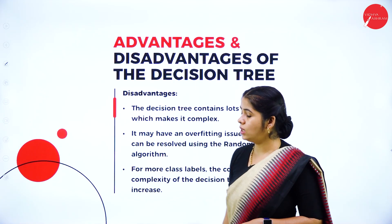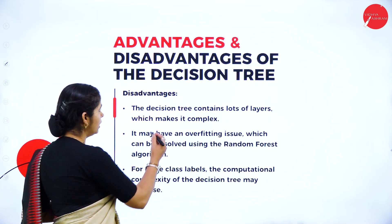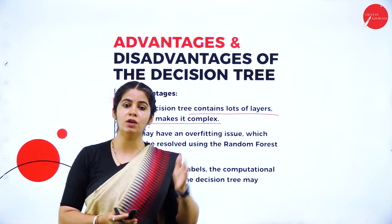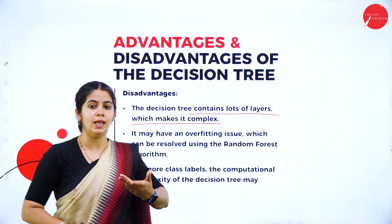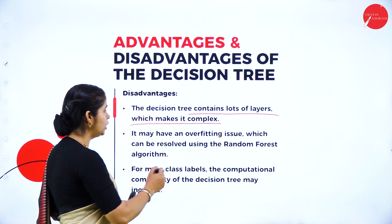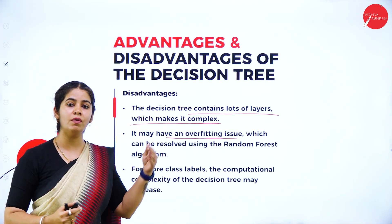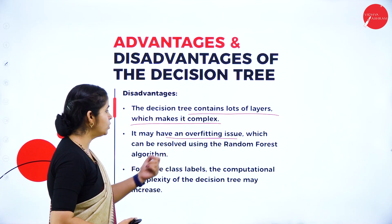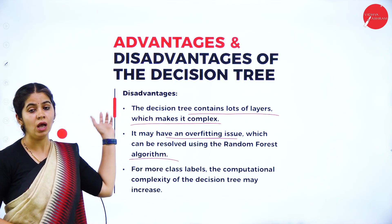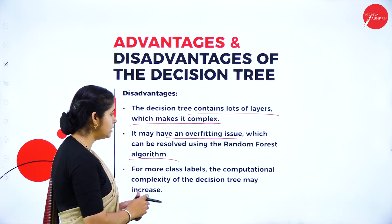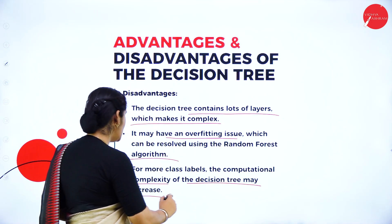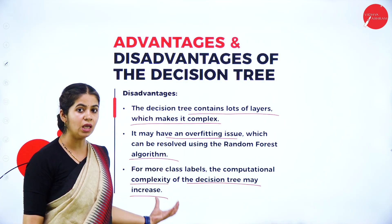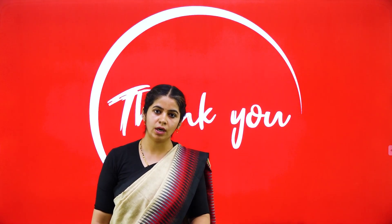Disadvantages of the decision tree: the tree contains many layers, which makes it complex when taking a decision on any complex problem — it will have more levels, creating problems. It may have overfitting issues: for complex problems, everything cannot fit within a particular level of the tree, but overfitting can be resolved by using the Random Forest algorithm. For more class labels, the computational complexity of the decision tree increases as the complexity of the problem increases. These are the disadvantages of the decision tree. Thank you.